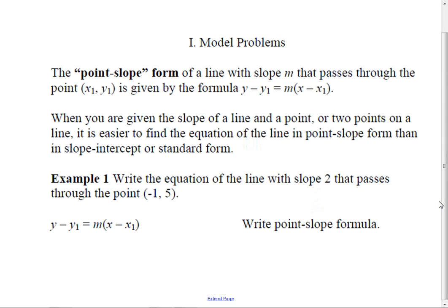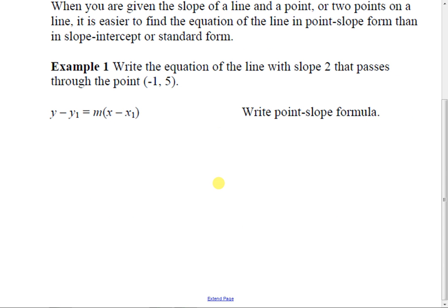We're going to learn a new form, which is a nicer form. It's the form I use in calculus. It's called point slope. What is the slope formula? M is equal to y1 minus y2 over x1 minus x2.